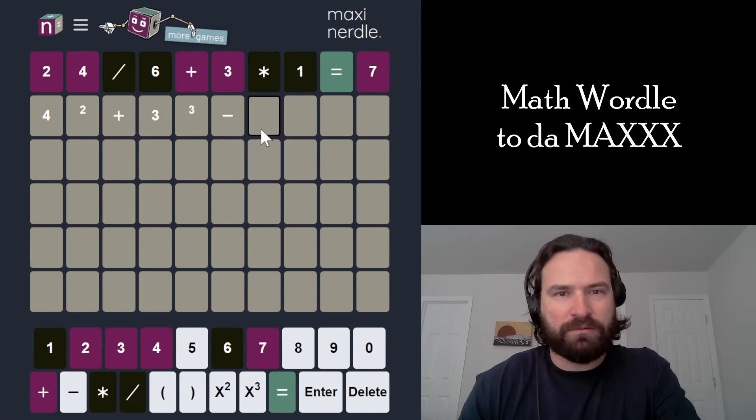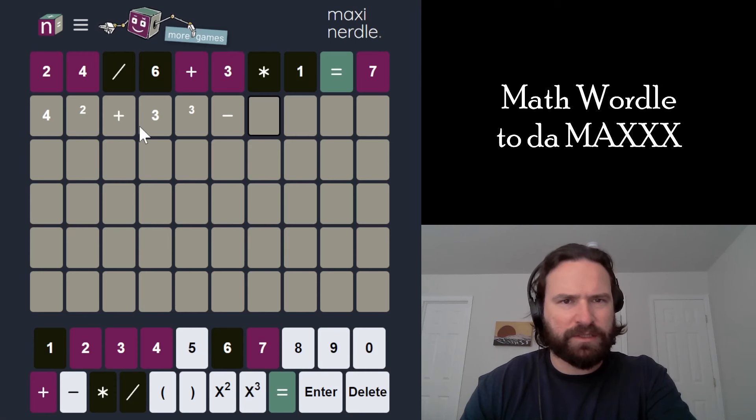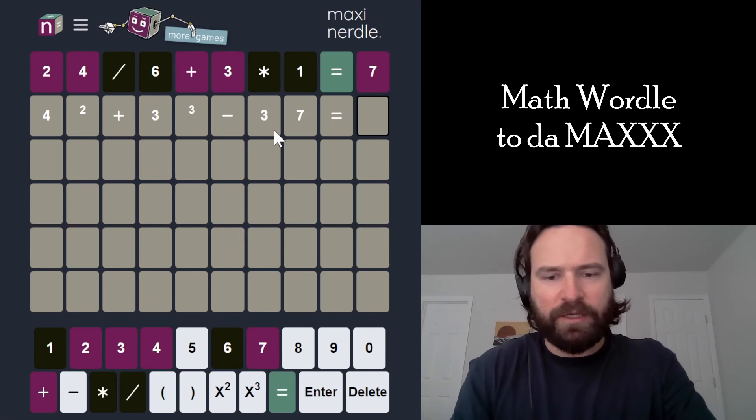I could do 37. Can I? No, I can't. That would be a double-digit number. Wait. So what did I say this was? 43. 37 equals 6. I would do that. That's fine.